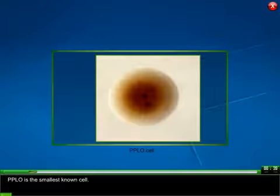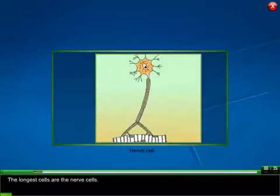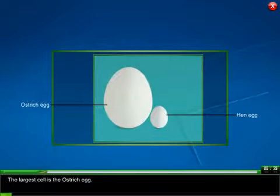PPLO is the smallest known cell. The longest cells are the nerve cells. The largest cell is the ostrich egg.